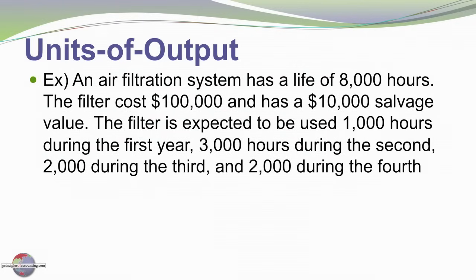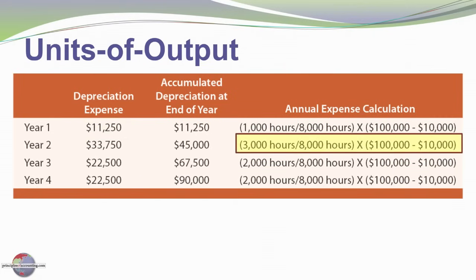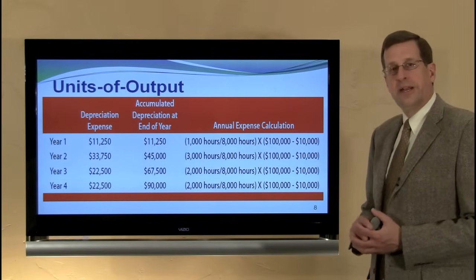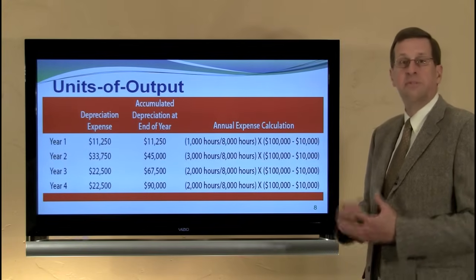For example, we have an air filtration system at a hospital that has an 8,000 hour life. The system has a $100,000 cost and $10,000 salvage value. The expected utilization is 1,000 hours during the first year, 3,000 hours during the second, and 2,000 for each of the next two — totaling 8,000 hours. In the first year we expect to use 1,000 of the total 8,000, so one-eighth of the depreciable base is consumed, producing depreciation expense of $11,250. The next year we used 3,000 hours, so three-eighths of the depreciable base — or $33,750 — is recorded as expense. This method is not often used, but it works well for special situations; for example, the airline industry, where they have very expensive engines with determinable useful lives measured in hours.